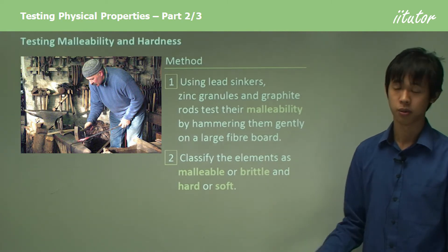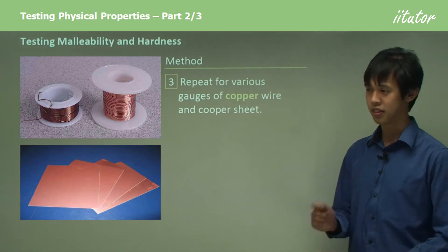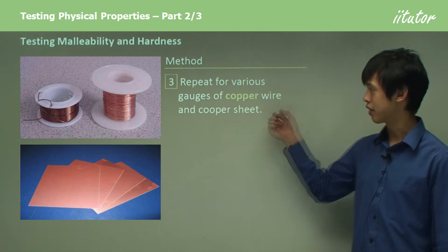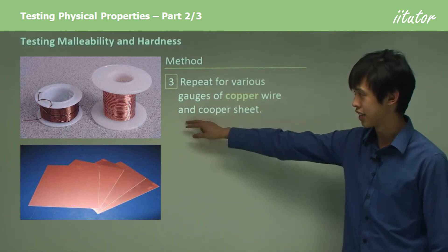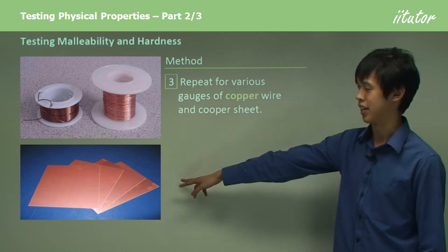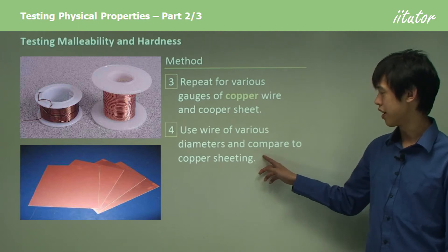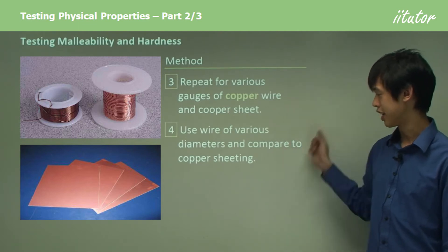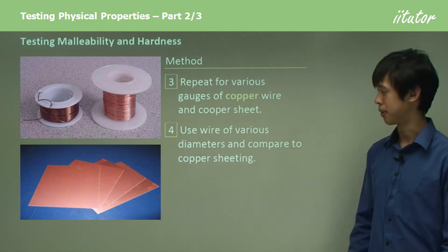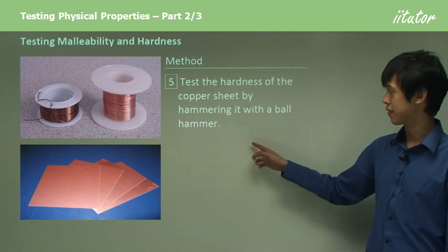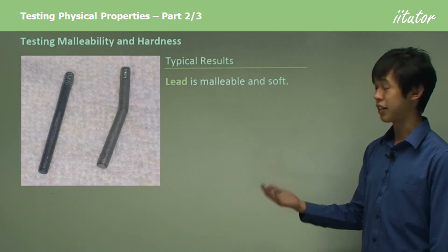Then we're going to repeat this same thing with the ball hammer, hitting the metal with different gauges of copper wire — different thicknesses — as well as different gauges of copper sheet. We use wire of various diameters, which is different gauges, and compare it to the copper sheeting. The shape will affect how malleable these things are, so again we test the hardness of the copper sheet by hammering it with a ball hammer.